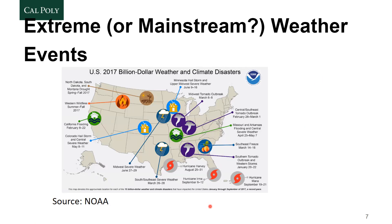Extreme weather events are becoming more and more common. Looking at billion-dollar infrastructure disasters in 2017 — events that caused at least one billion dollars in damage — there were 15 such events in that year alone, more than once a month. To some extent, these events aren't even extreme anymore; they're becoming mainstream weather events. We need to plan for them and make our infrastructure more resilient, because what we used to think of as extreme weather is happening with increasing frequency.